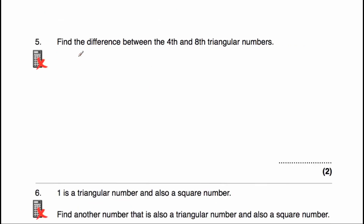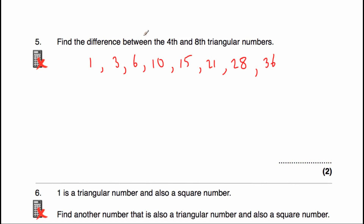Question five says find the difference between the fourth and eighth triangular numbers. Listing the triangular numbers: 1, 3, 6, 10, 15, 21, 28 — adding 2, 3, 4, 5, 6, 7 — and then add eight to get 36. We need the fourth triangular number (10) and the eighth (36). The difference is 36 take away 10, which equals 26.